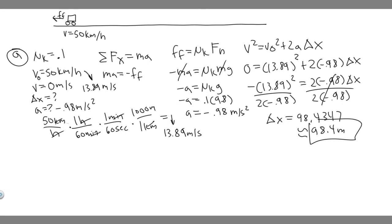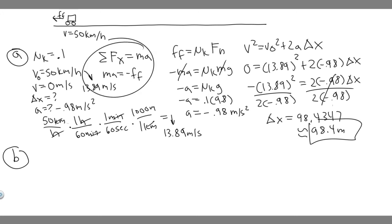So the minimum stopping distance for Part A is 98.4 meters — that's if the driver slams on the brakes on the rainy road. That's your answer to Part A.